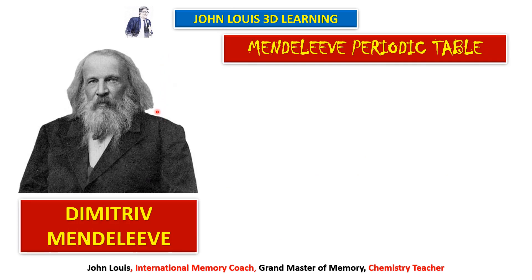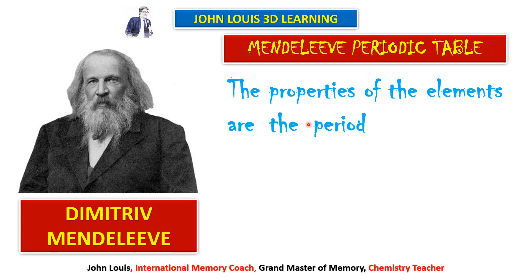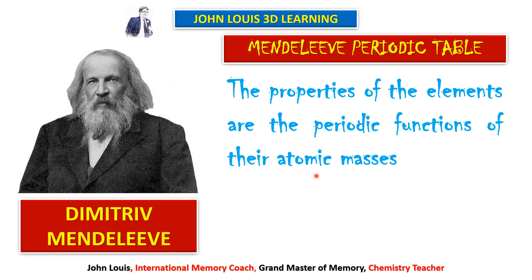Then Dmitri Mendeleev developed a new system. He also arranged all the elements in the order of their atomic weights. His law stated: the properties of the elements are the periodic functions of their atomic masses. By his time there were 63 elements known — another 7 discovered since Newlands.